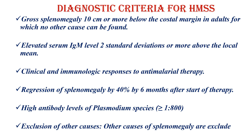The diagnostic criteria for Hyperactive Malarial Splenomegaly Syndrome include: splenomegaly greater than 10 cm below the costal margin; elevated serum IgM level two standard deviations or more above the local mean; clinical and immunologic response to anti-malarial therapy; and regression of splenomegaly by 40% within 6 months of starting therapy. High antibody levels to Plasmodium species and exclusion of other causes of splenomegaly are also required.